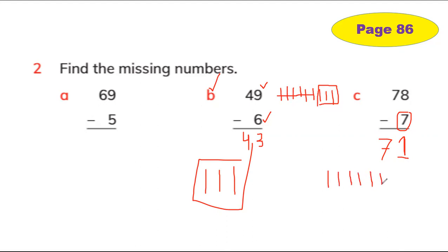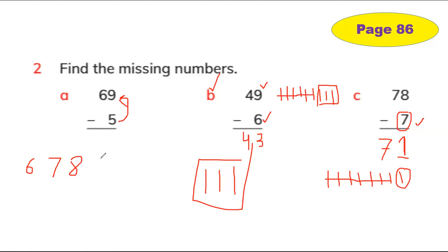Or you can draw lines. For example, 8 ones: one, two, three, four, five, six, seven, eight — now cancel seven lines. One line is left. Next example: start counting after 5 and stop at 9. After 5: six, seven, eight, nine — that's four numbers. So 9 minus 5 equals 4, and the tens digit 6 stays the same. The answer is 64.